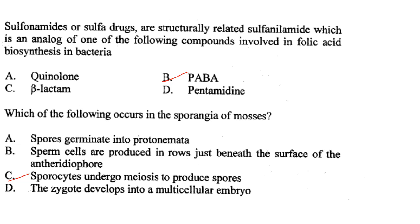Which of the following occurs in the sporangia of mosses? Spore mother cells undergo meiosis to produce spores. Answer is option C.